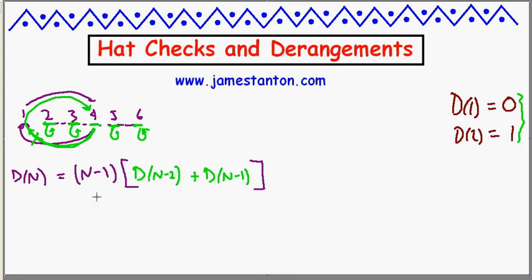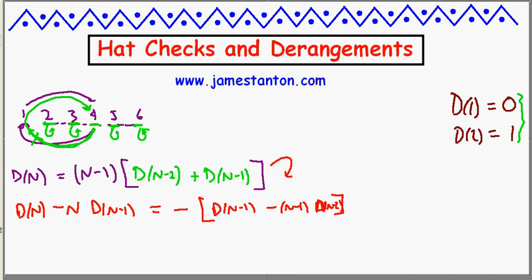Folks have discovered in thinking about this that if you take the number of derangements, d of n, and subtract from it n times d of n minus one, you can use this relation to see that this is exactly the opposite of the same formula down one value. This is just a direct consequence of this recursive relation, so you need to play with this on the side. But the nice thing about this, it means that this next formula is minus one times the same formula, another value down.